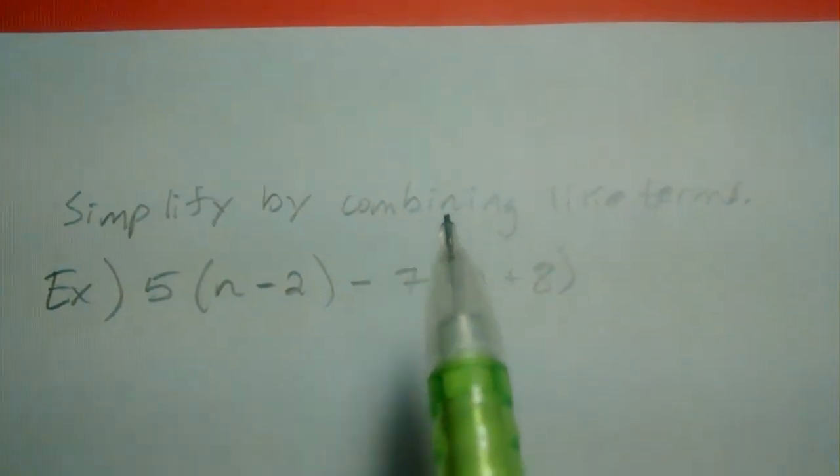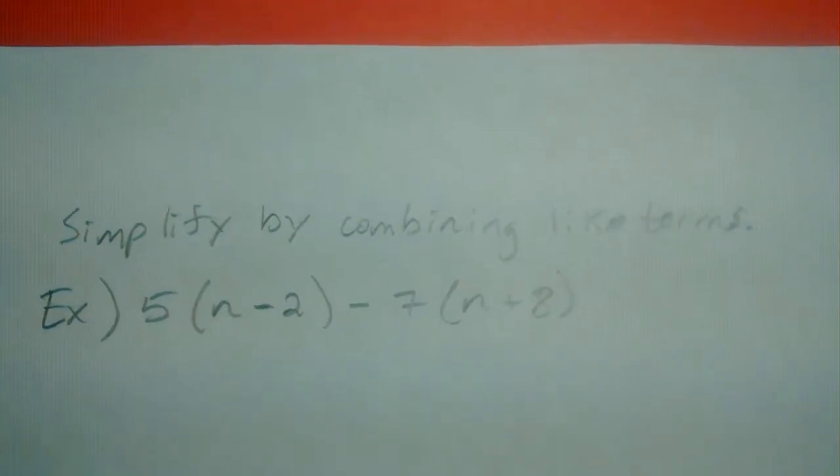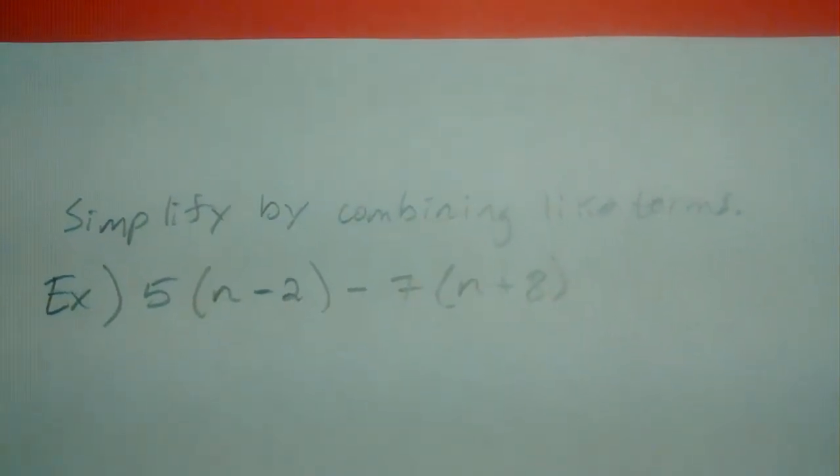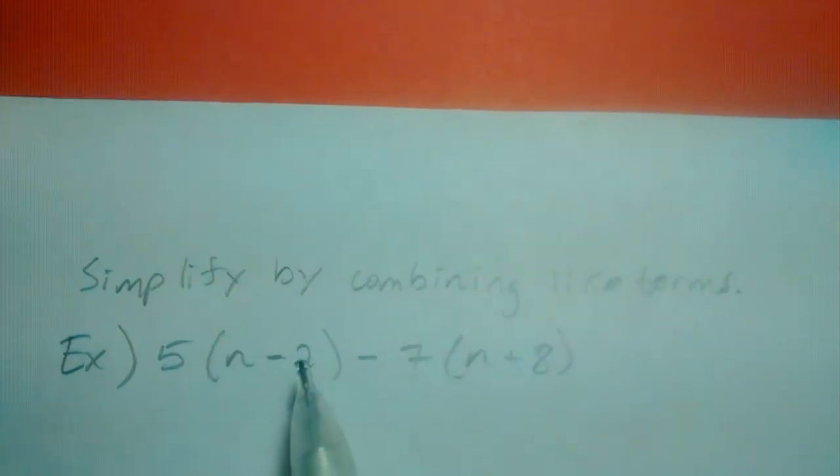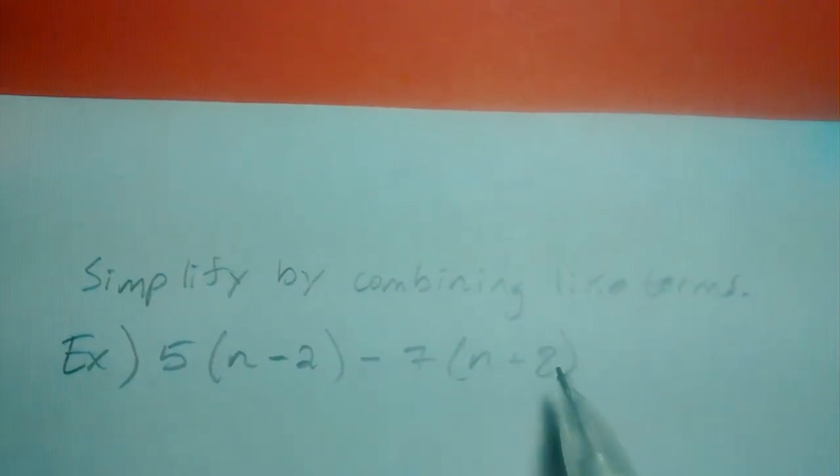Let's look at one more example here of simplifying an expression by combining like terms. Here we have 5 times this quantity, n minus 2, subtracting 7 times this quantity.